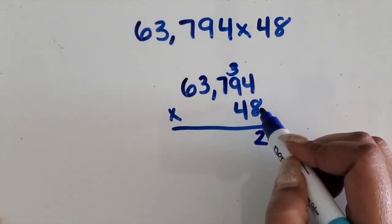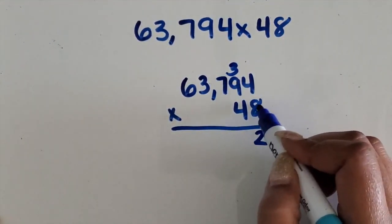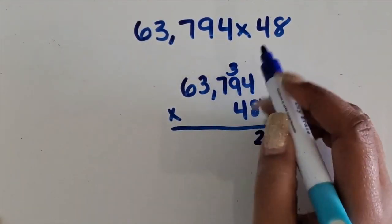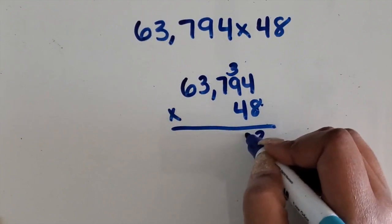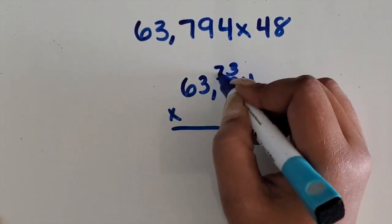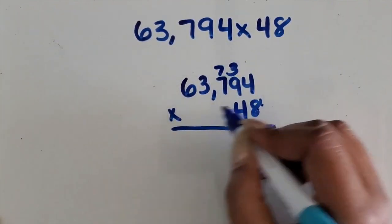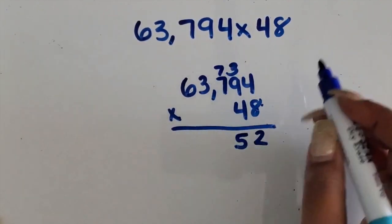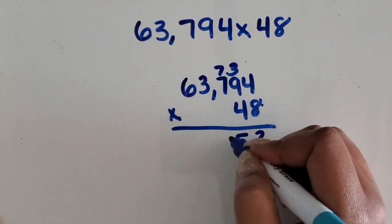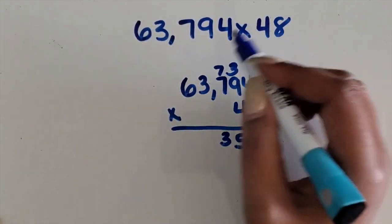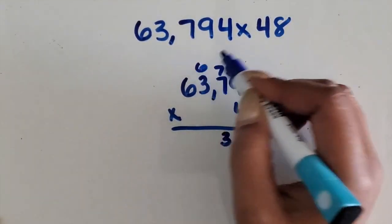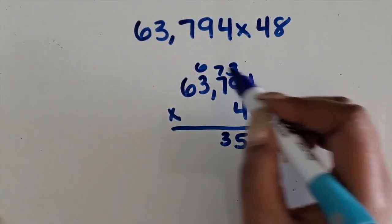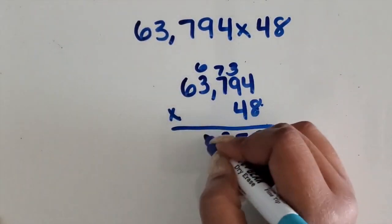Regroup the 3. 8 times 9 is 72 plus the 3 is 75. Regroup the 7. 8 times 7 is 56 plus 7 is 63. 8 times 3 is 24 plus 6 is 30.